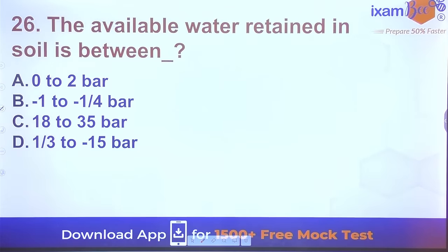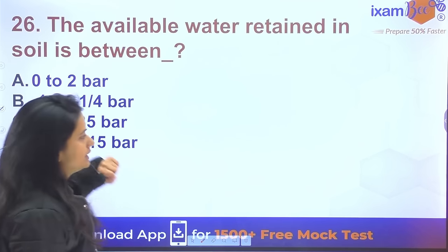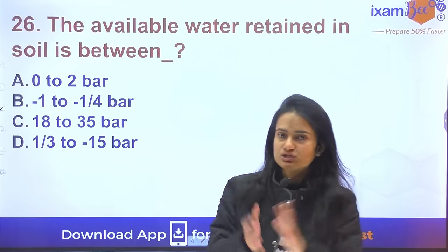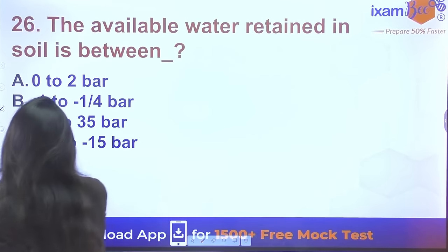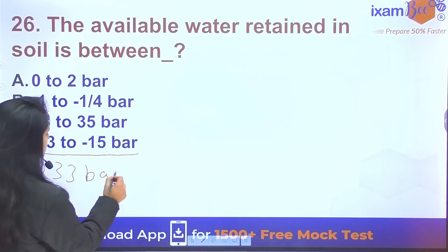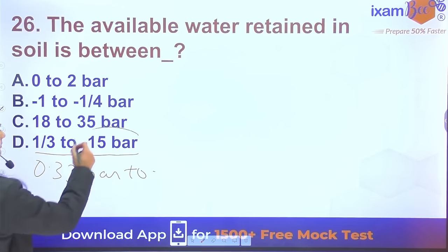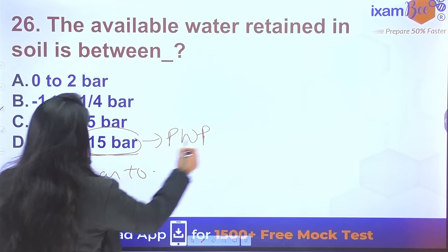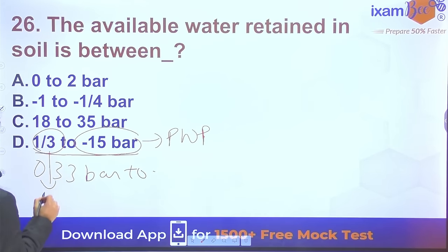Question 26: Available water retained in soil — available water is present between -1/3 bar (or -0.33 bar, which is field capacity) and -15 bar (which is the permanent wilting point, PWP). The water present between these two values is the available water.